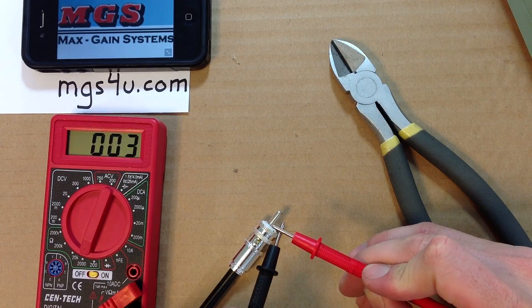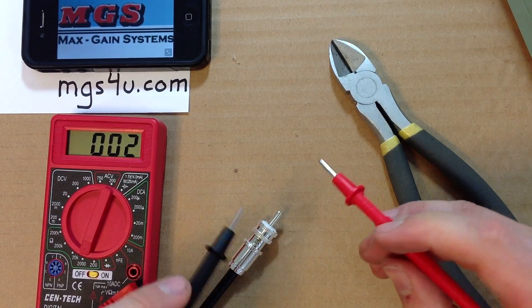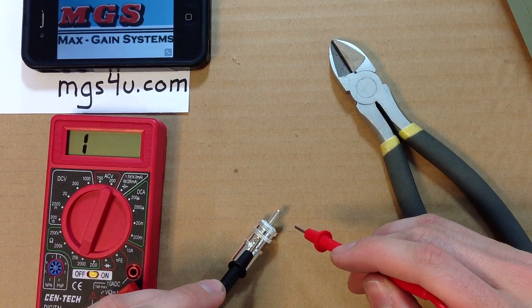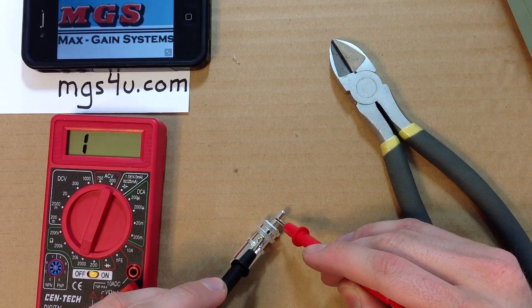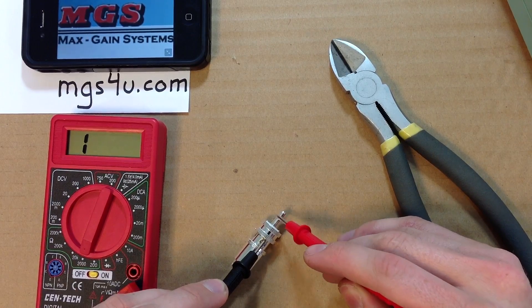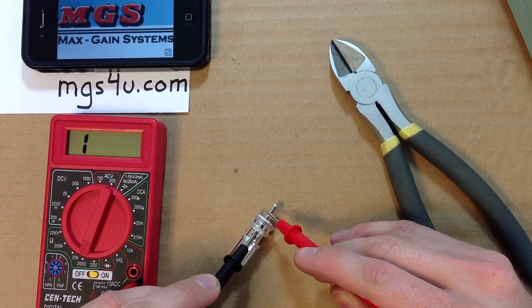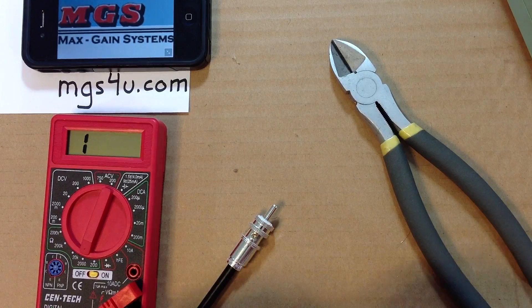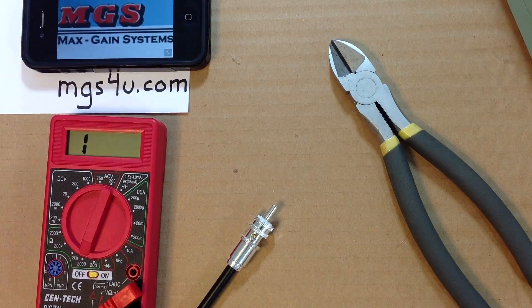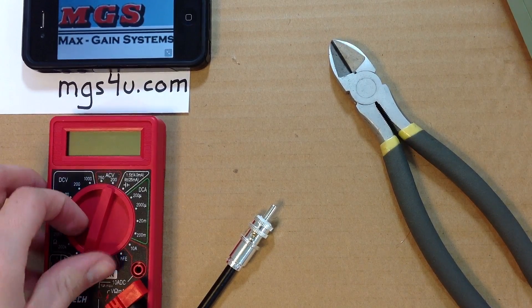Touch one lead to the body and one lead to the center pin of the conductor. My meter is reading that there is infinite resistance so my installation is working perfectly. Be sure to turn off the meter when done to conserve its battery.